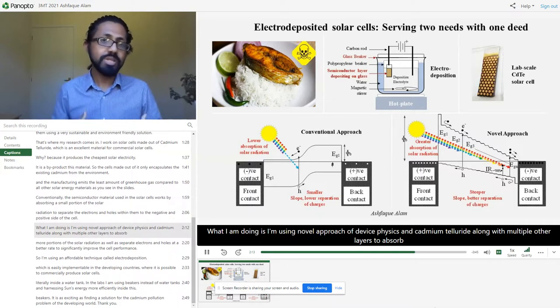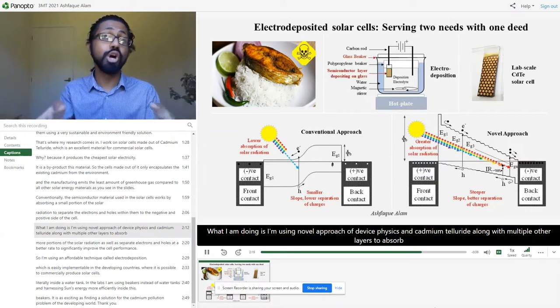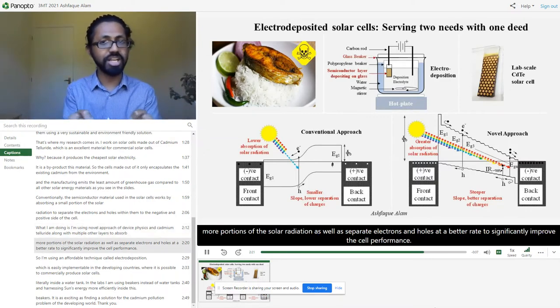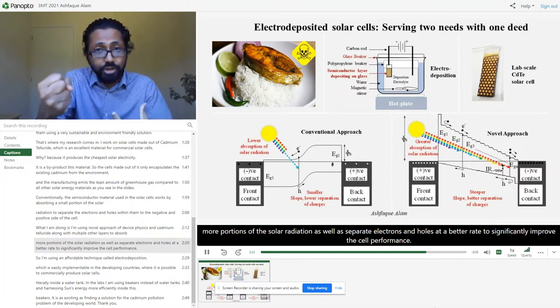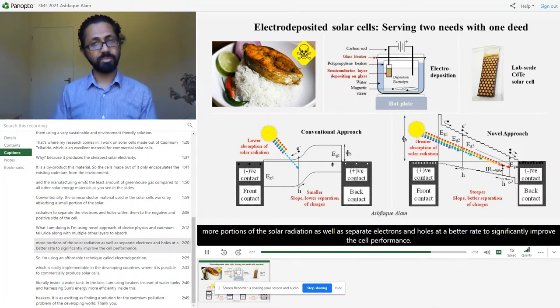What I am doing is using a novel approach of device physics and cadmium telluride, along with multiple other layers, to absorb more portions of the solar radiation, as well as separate the electrons and holes at a better rate to significantly improve the cell performance.